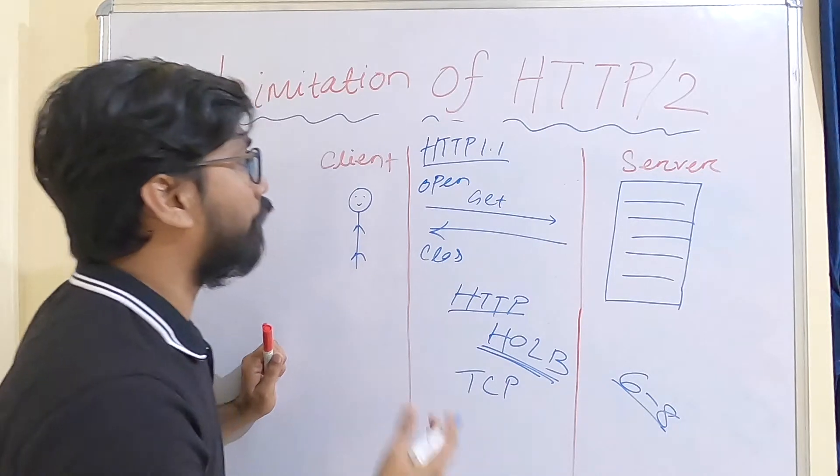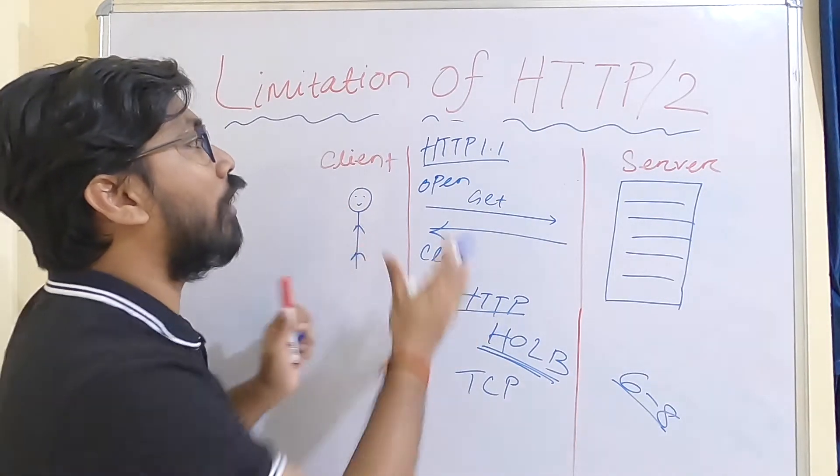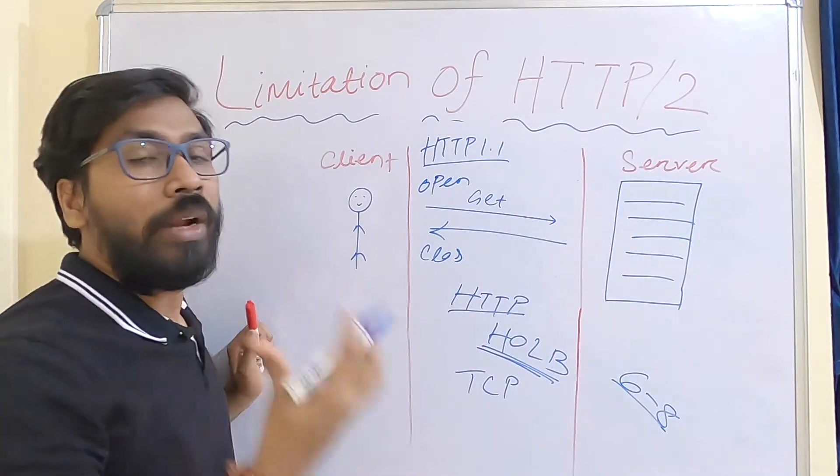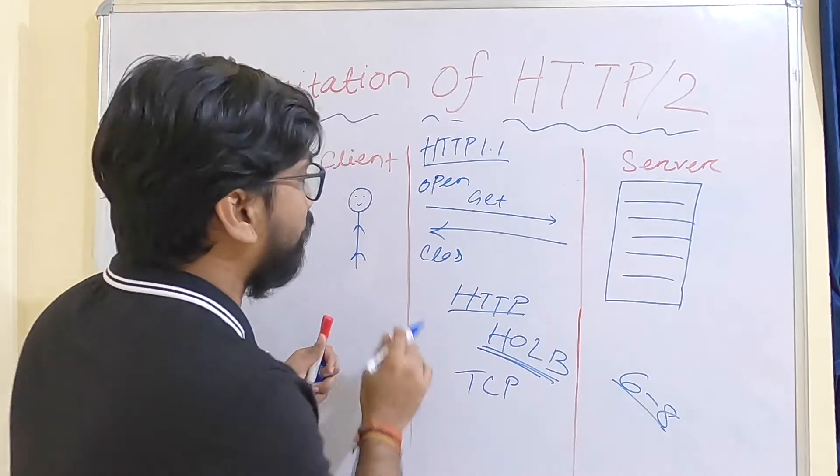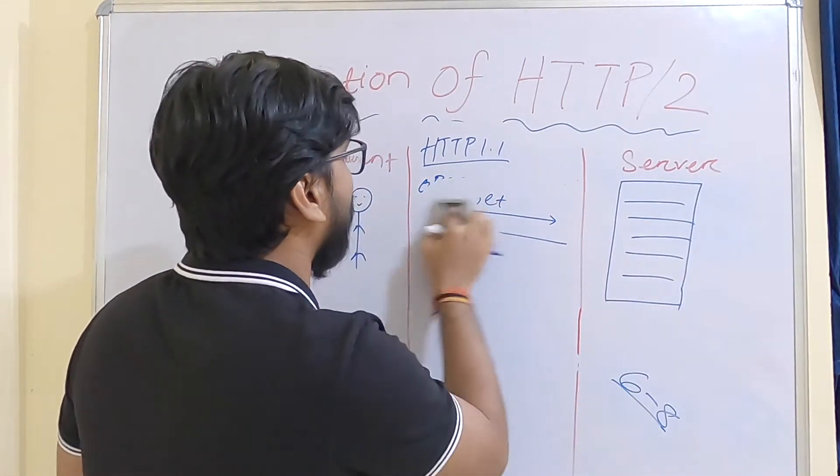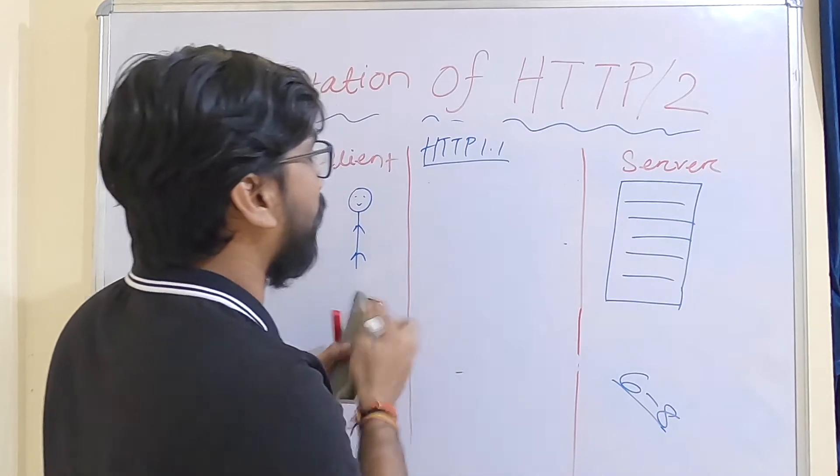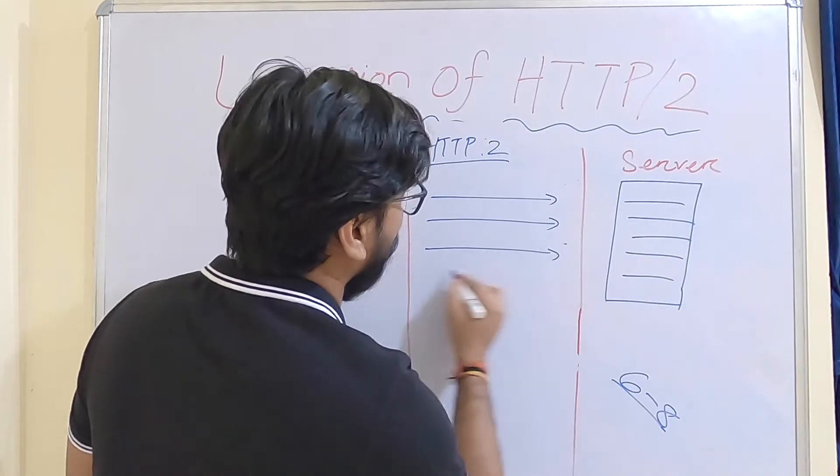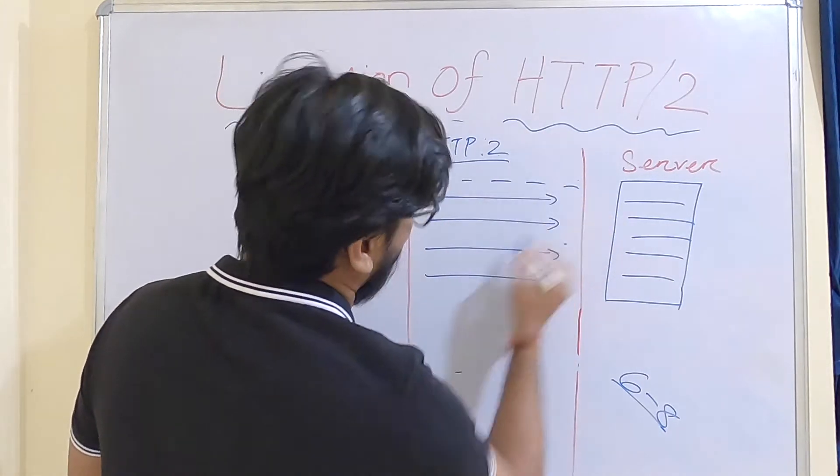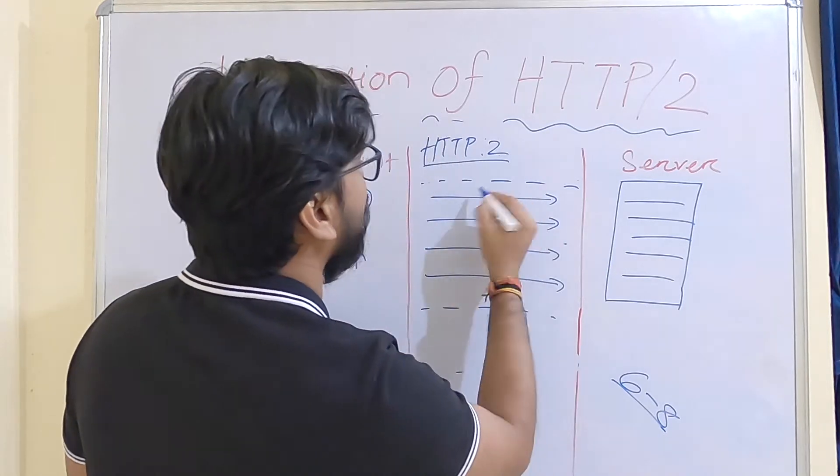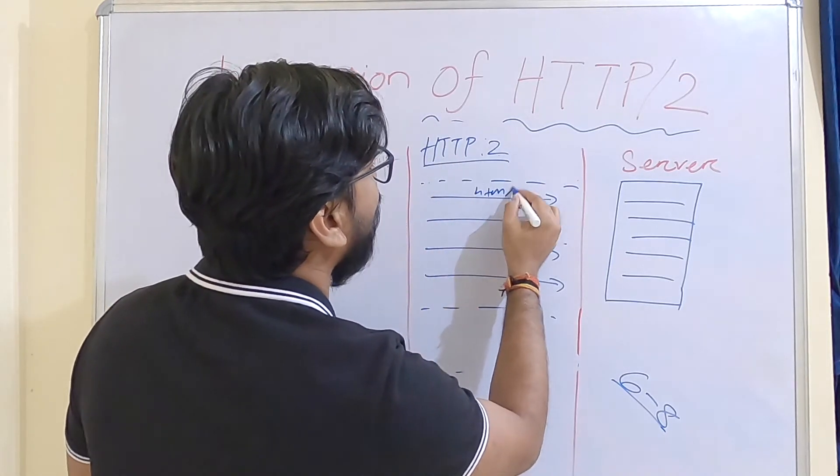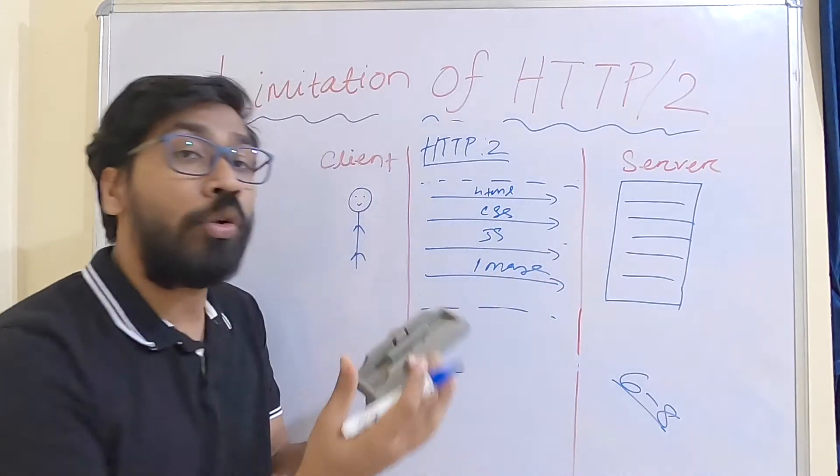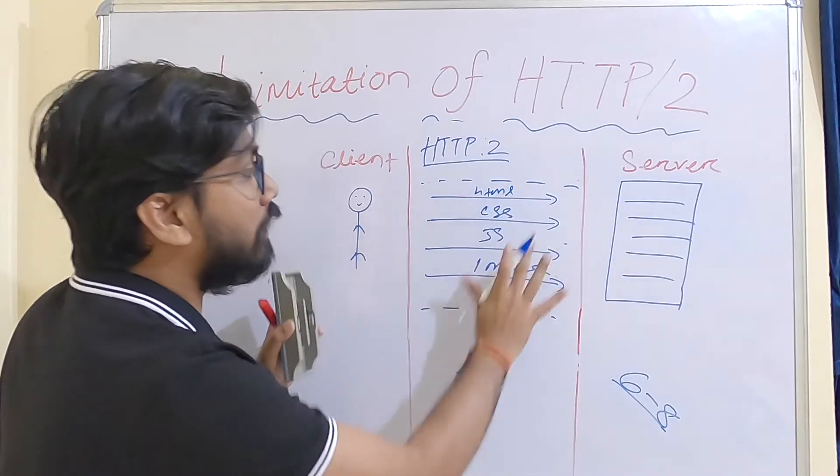This problem was actually resolved by HTTP/2 by introducing the feature of multiplexing. In multiplexing, we can send multiple requests at the same time. In HTTP/2, we can send multiple requests in the same connection. This is one connection - we can send multiple requests like HTML file, CSS file, JS file, and images.